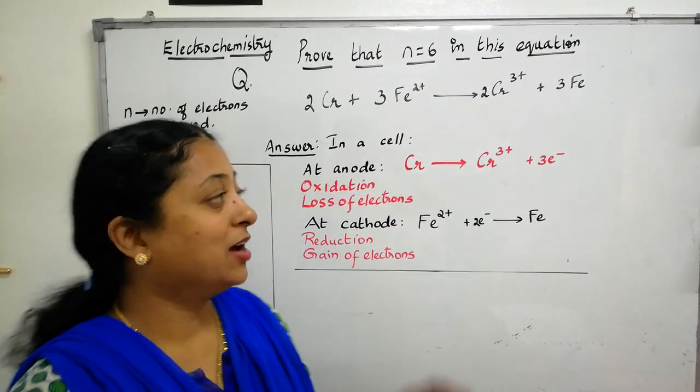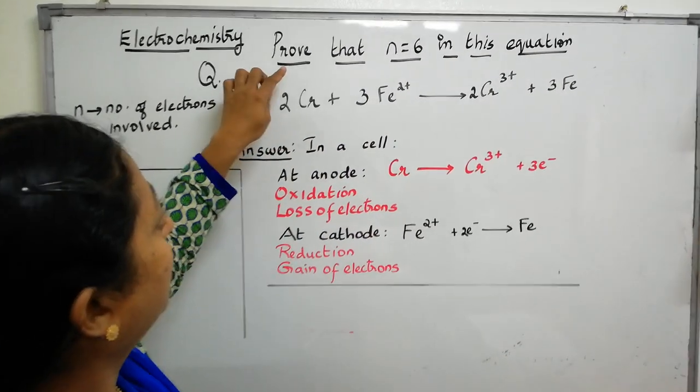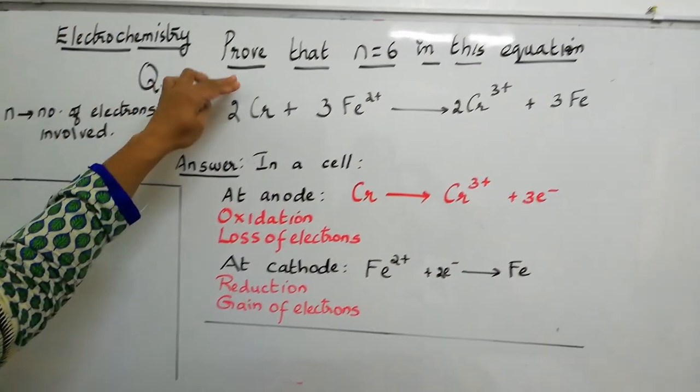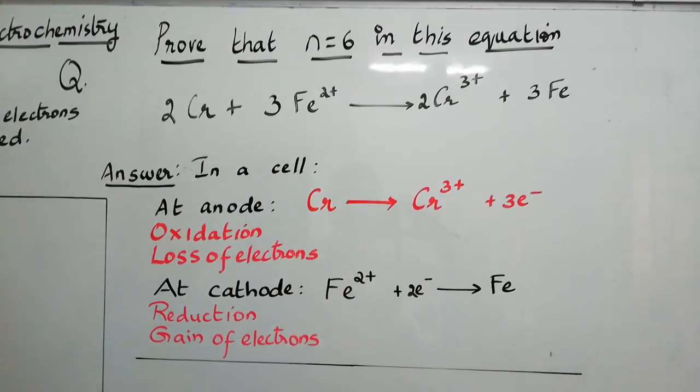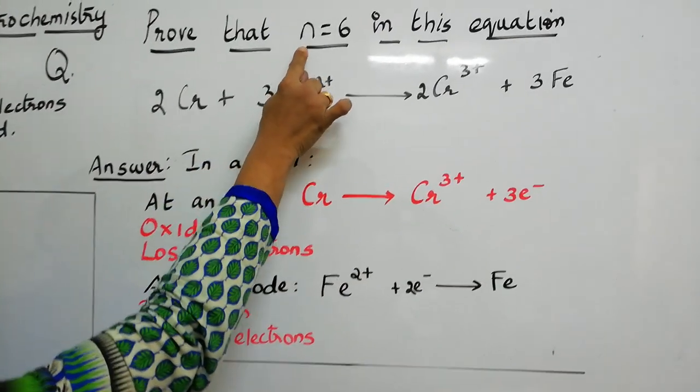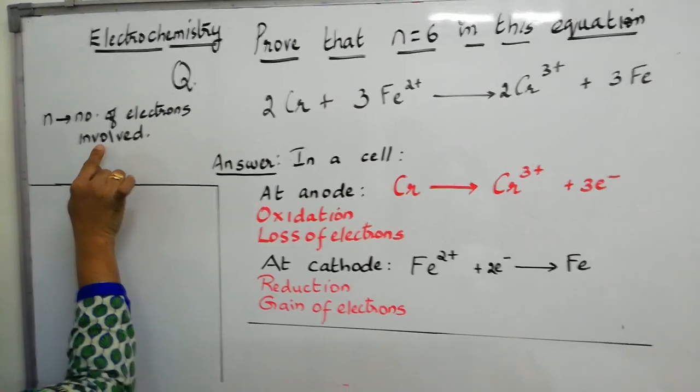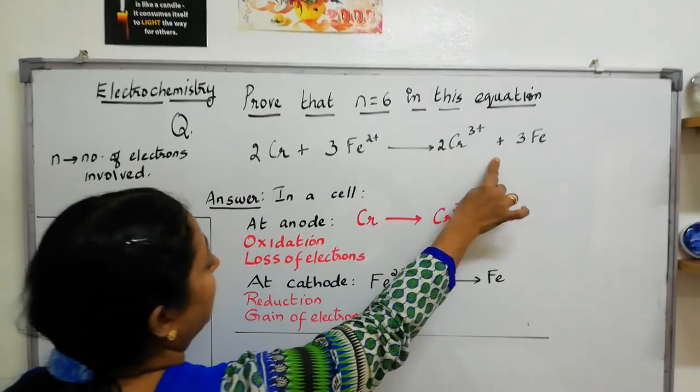Hello students, refer to the question. In electrochemistry, prove that n equals 6 in this equation. What is the meaning of n? n refers to number of electrons involved in this redox reaction.